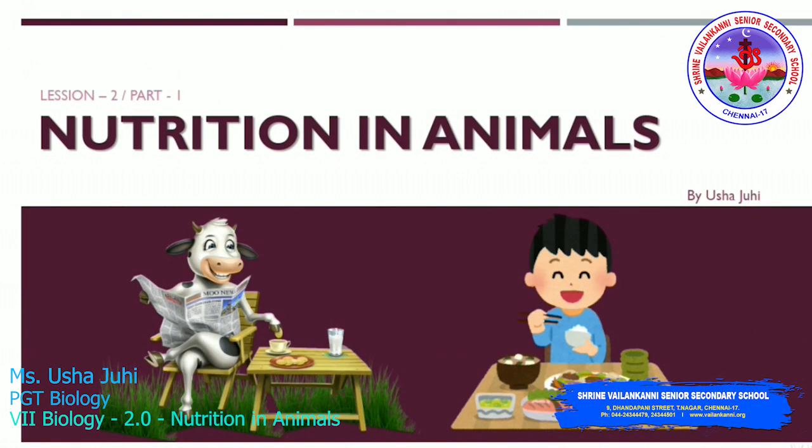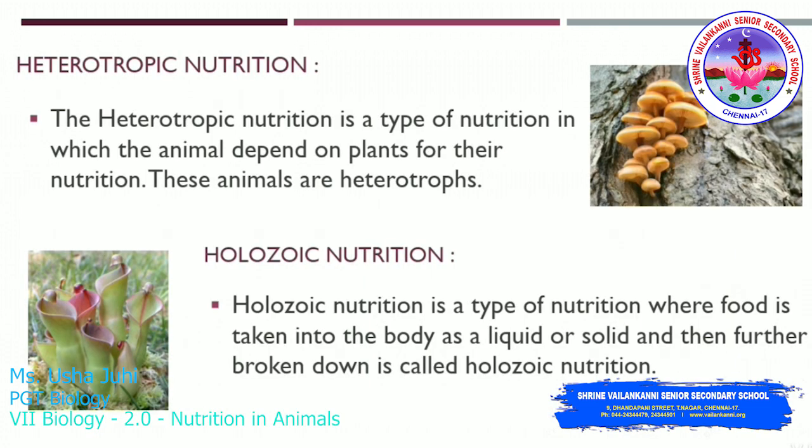Welcome students to biology class. Today's topic is nutrition in animals. The first type is heterotrophic nutrition — a type of nutrition in which animals depend on plants for their nutrition. These animals are heterotrophs.